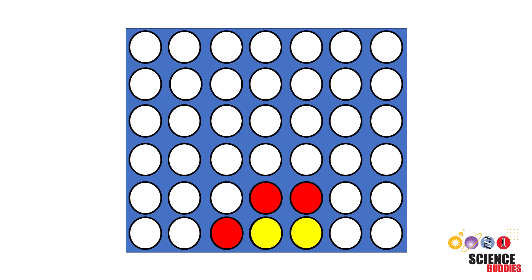Connect 4 consists of a 6x7 grid, and the goal of the game is to get 4 in a row. Now imagine if we could teach a computer to not just play the game, but to play it with an unbeatable strategy.